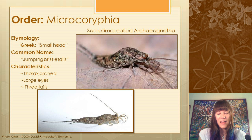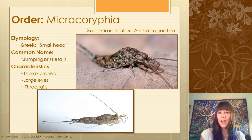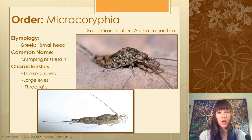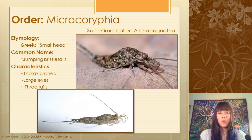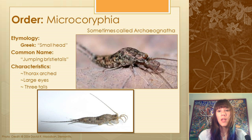Microcoryphia are often found under bark, so unless you're hacking away at tree bark you probably won't find them. The best method is called smogging or fogging — you take an old dead tree, waft pesticides through it, and put a white sheet underneath to catch things that drop out. That's pretty much how you collect these guys.